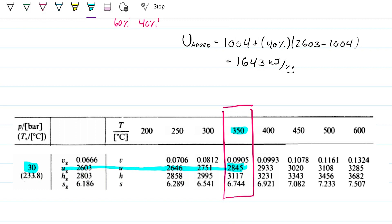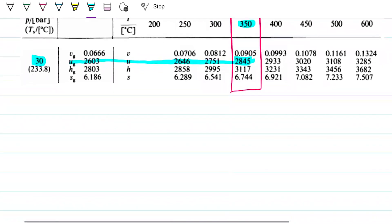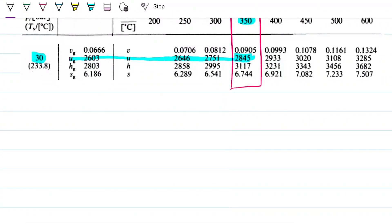And out of these properties, the one I'm interested in is the internal energy. So this guy here, this is the one I'm looking for. 2845 is the internal energy of state 1. So let's think about the mass contribution going on here.